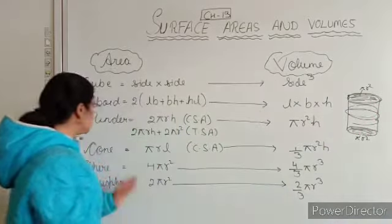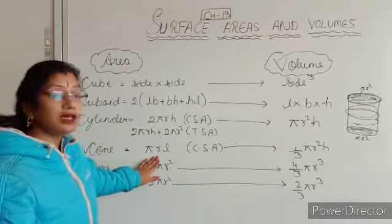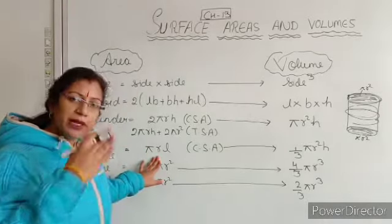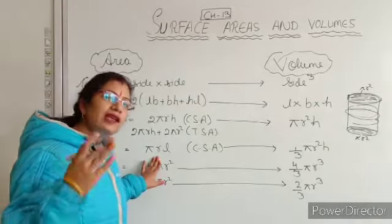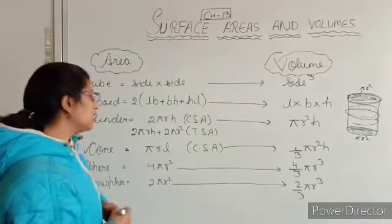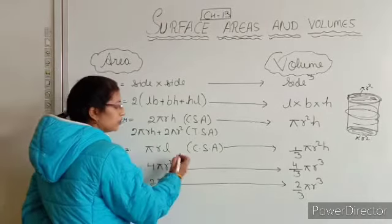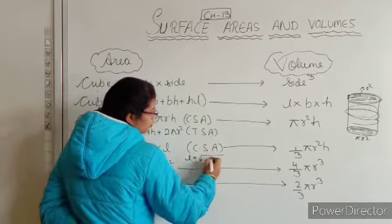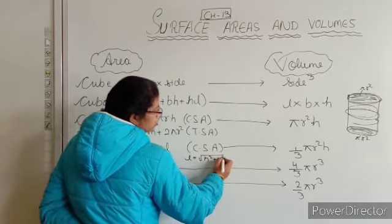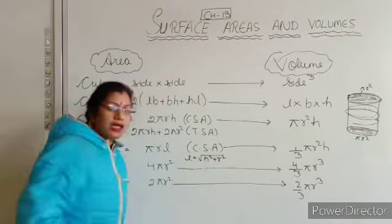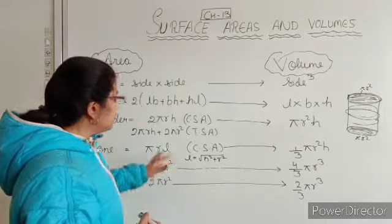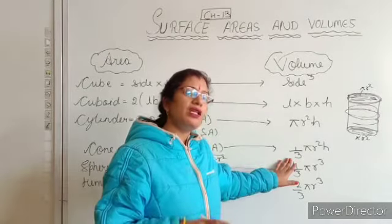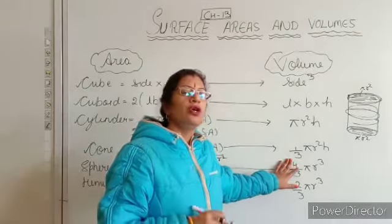Now next we are going to take a cone. For a cone, the curved surface area is pi R L. And if you want to find the volume, it is 1/3 pi R squared H.